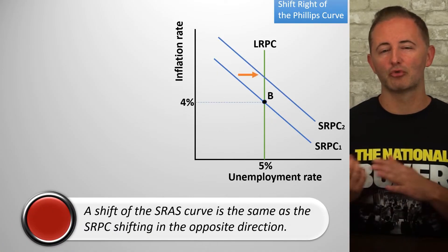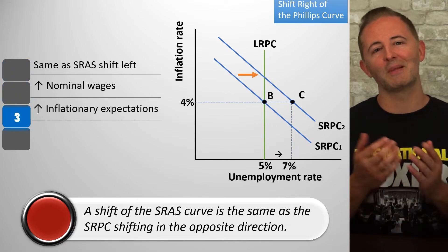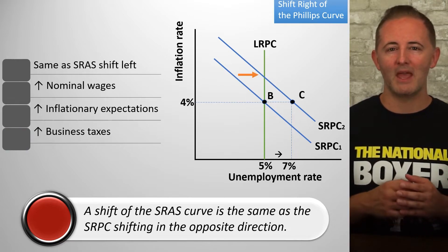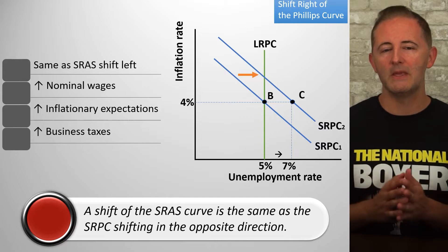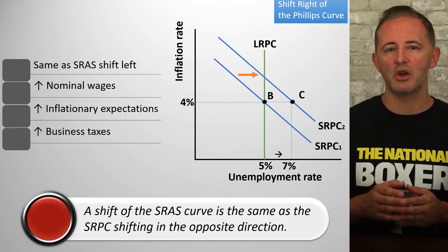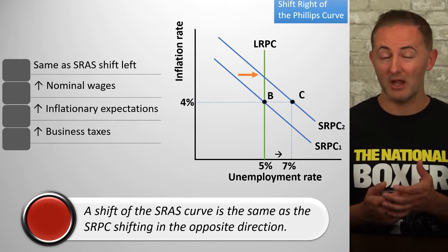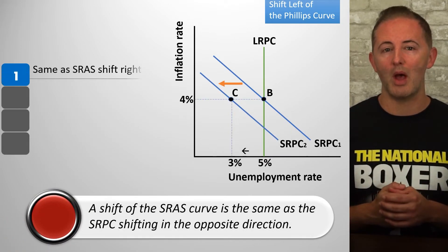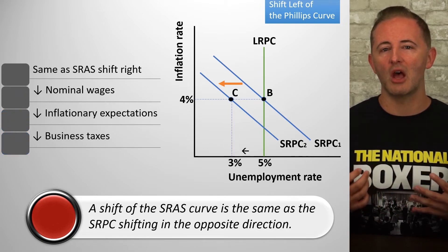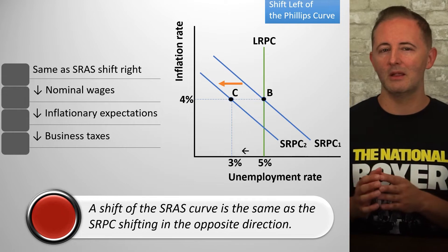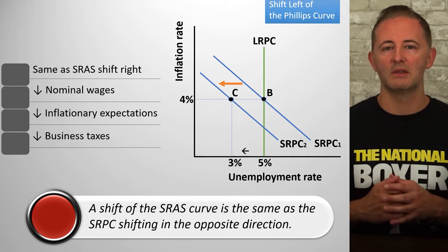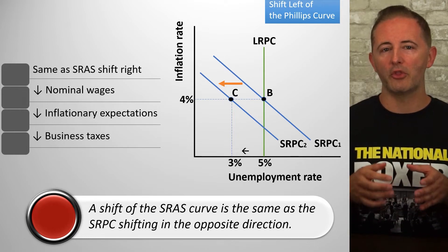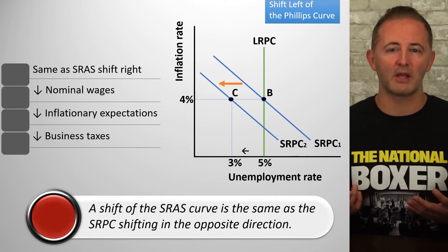The shifts of the SRPC are caused by the same things that shift the SRAS curve. The tricky thing is that they shift in opposite directions. So the SRPC shifting right is the same as the SRAS shifting left, and the SRPC shifting left is the same as the SRAS shifting right. Think about why it makes sense that these curves move in opposite directions: when the SRAS shifts left, it indicates the worst of all outcomes — higher prices and falling output. That's exactly what the SRPC shifting right indicates as well — it means that it takes higher inflation to maintain every unemployment rate. By the way, there is not a causal relationship between these two models. One does not cause the other. They are both caused by the same things and are merely two different ways of expressing what has happened.